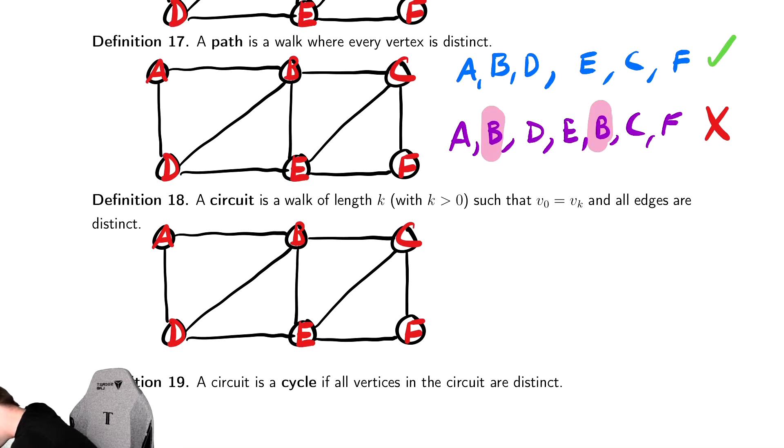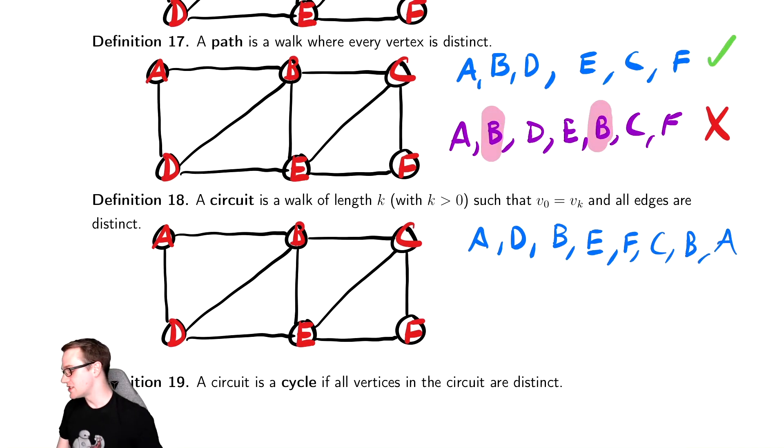We'll write that in blue again to say it's valid. A, D, B, E, F, C, B, A. And this is valid. Even though we've reused vertices, we have not reused any edges. Let's verify that.